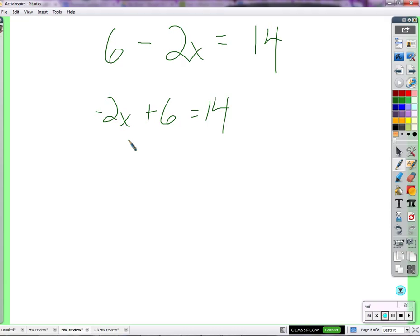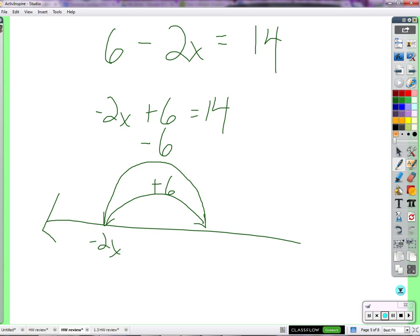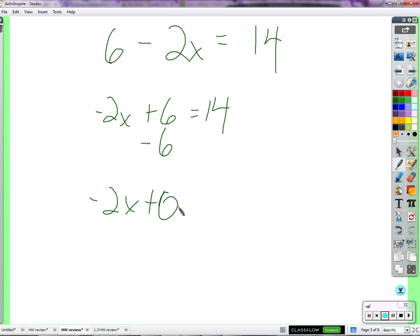So now I can see even more clearly what's being added. 6. We're adding 6. And to cancel out adding 6, we're going to subtract 6. That's what we're doing. Here is a negative 2x. Negative 2x plus 6 looks like this. And if I start here and I subtract 6, I'm just going back. 6 minus 6 is 0. So we have negative 2x plus nothing.